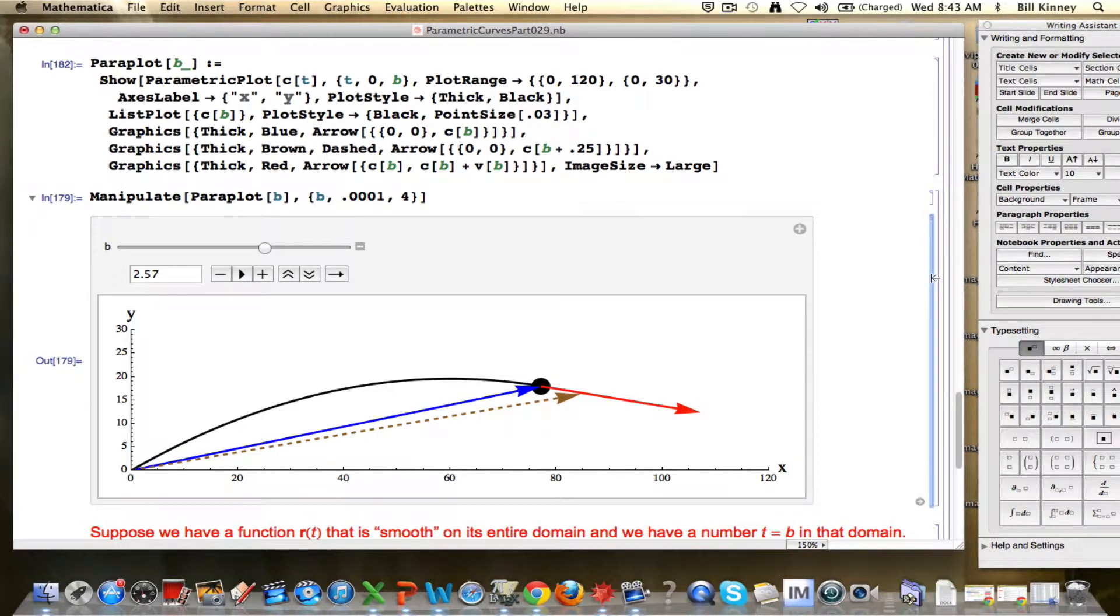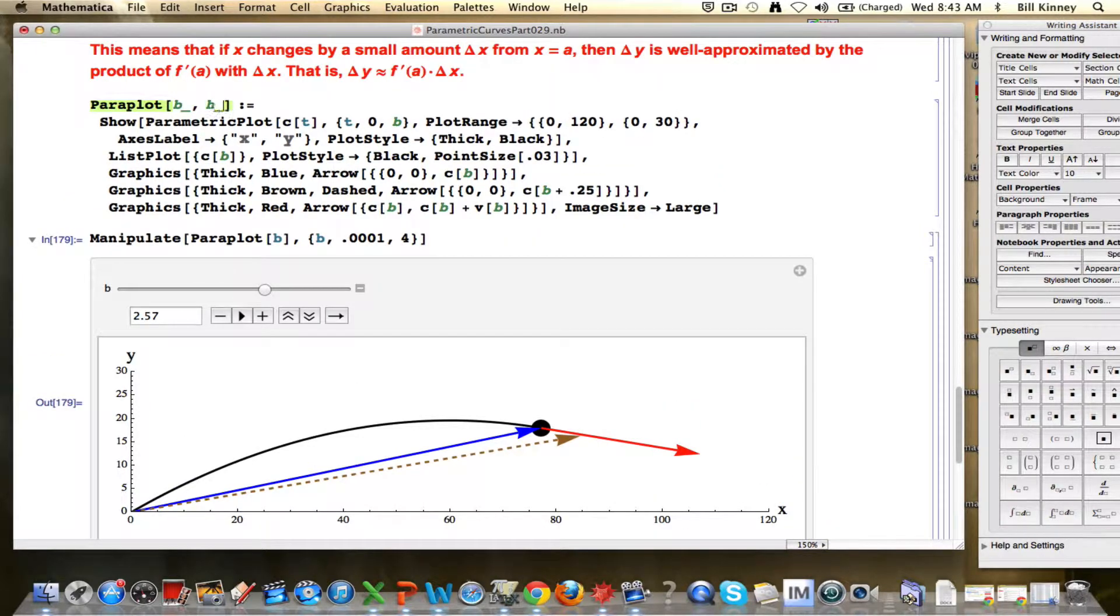What I want to do now is show you something quickly on Mathematica first, and then we'll talk about the acceleration vector. What I want to show you is that Mathematica is even more flexible than you could possibly imagine. In particular, I can make my plot here depend on two animation parameters, a B and an H. An H is going to represent delta T, essentially. I picked the letter H here because, oftentimes, calculus books use H in place of delta T. So I'm going to enter that code with the new animation parameter H.